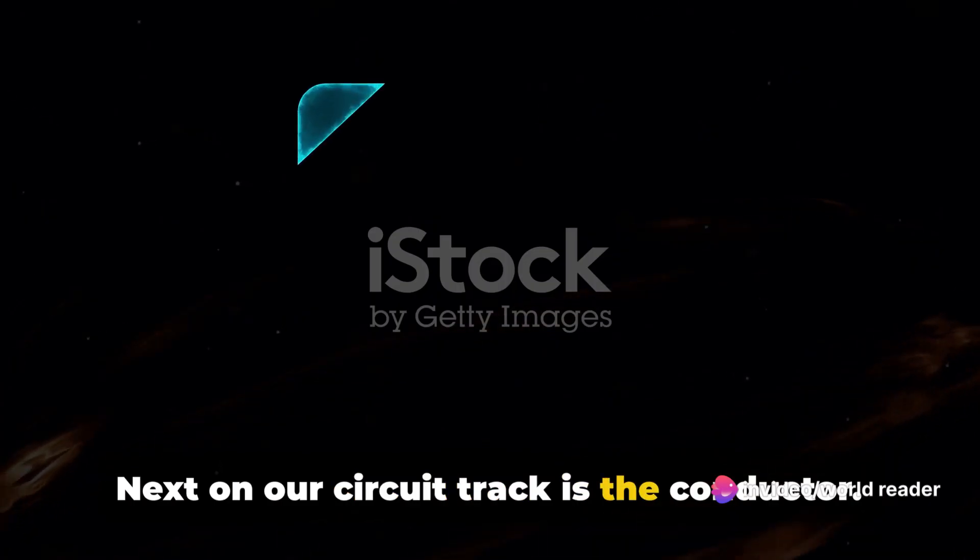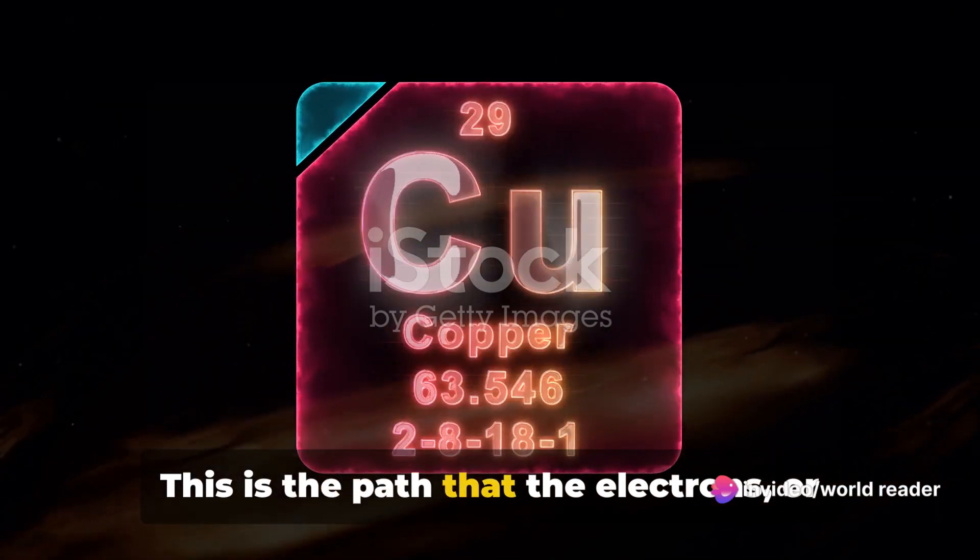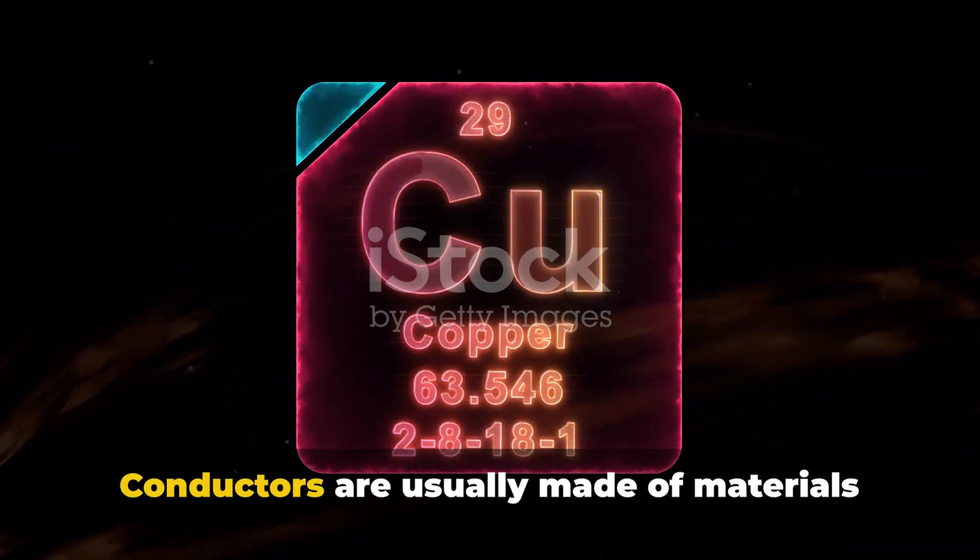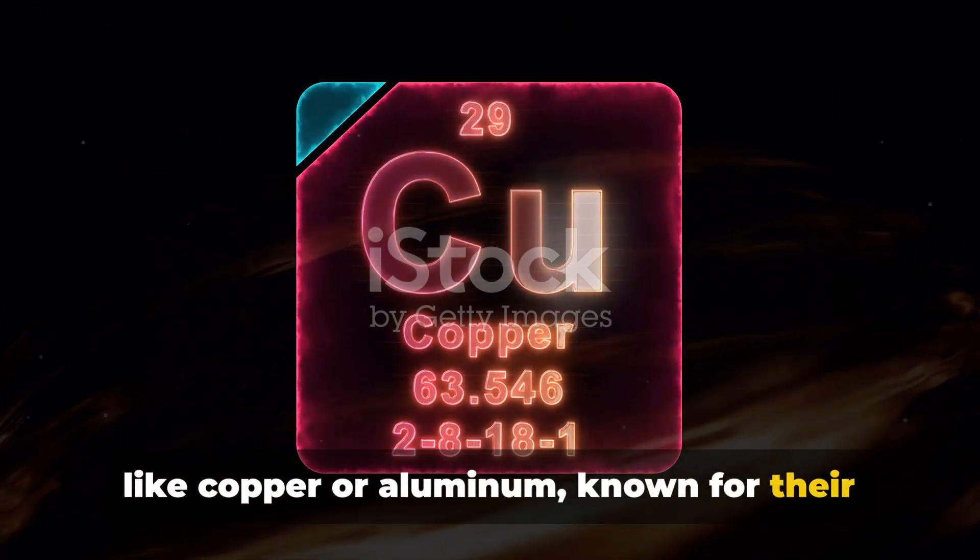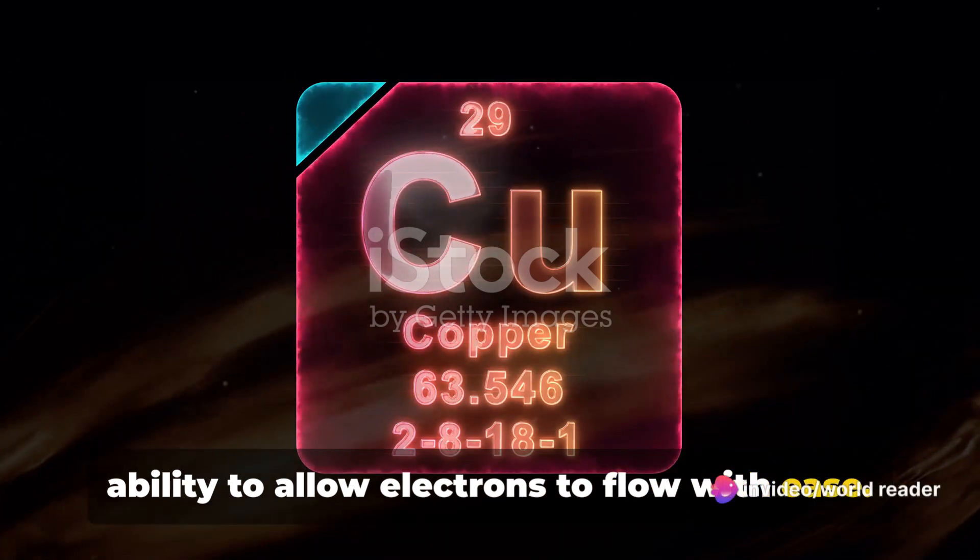Next on our circuit track is the conductor. This is the path that the electrons or our little racers follow. Conductors are usually made of materials like copper or aluminum, known for their ability to allow electrons to flow with ease.